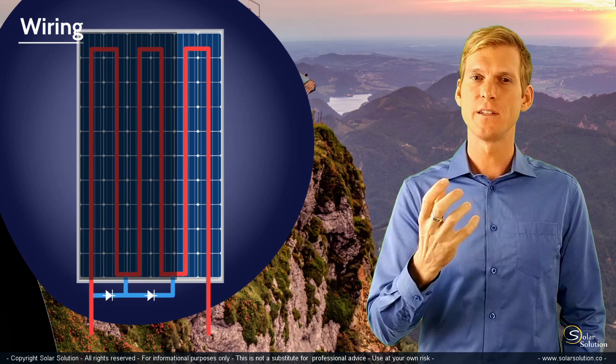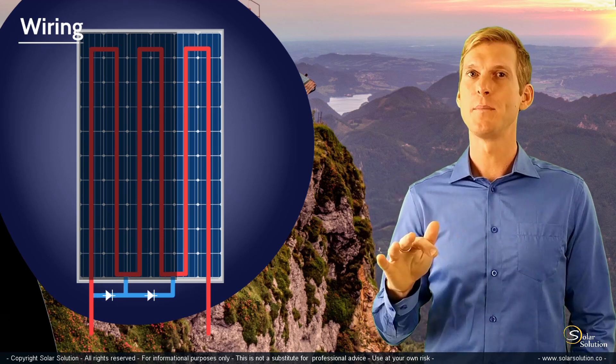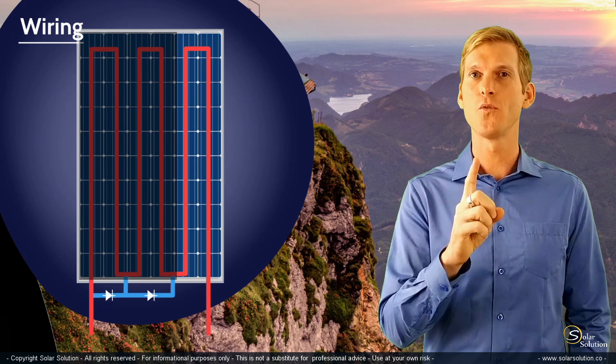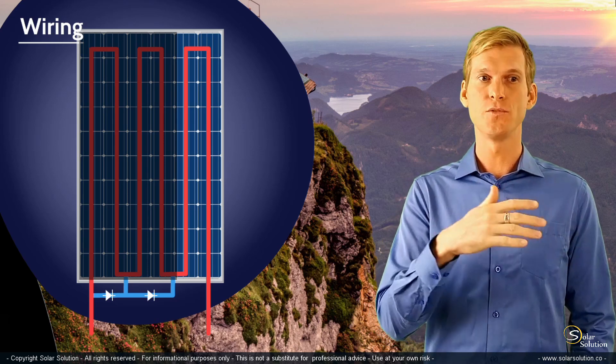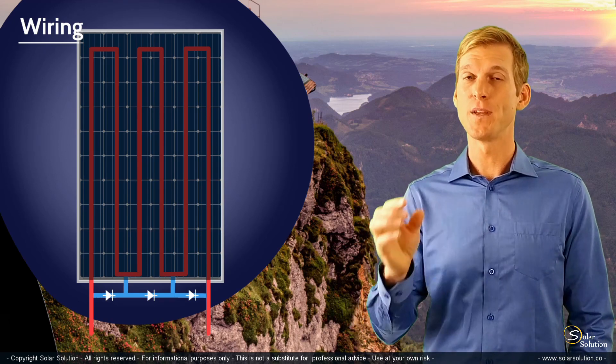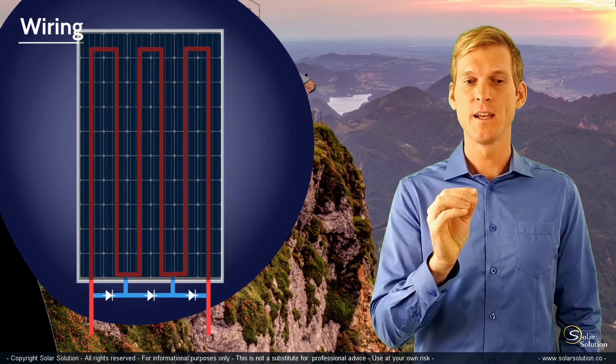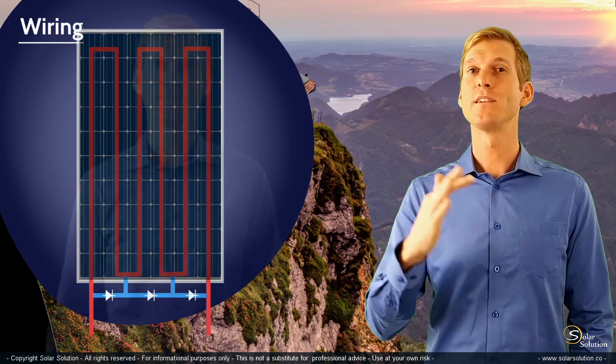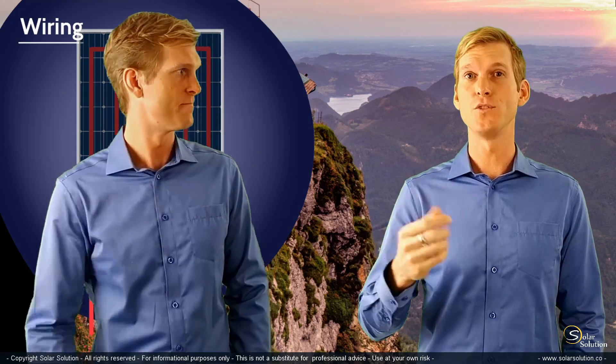The main message here is that if you wouldn't have any bypass diodes, if one cell would be malfunctioning due to shade or bad wiring or whatever, then the whole panel would stop functioning. If you have bypass diodes in place, then just part of the panel will be cut off, but the rest of the panel would still perform as usual.